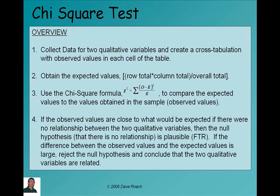The bottom line is if those observed values are close to what we would expect if there were no relationship, then the null hypothesis, that there is no relationship, is plausible. If the difference between observed values and the values we would expect is large, then we'll reject H0 and conclude that the two qualitative variables are related.